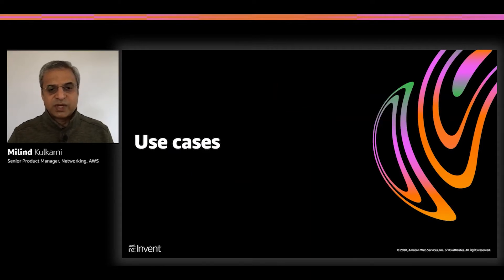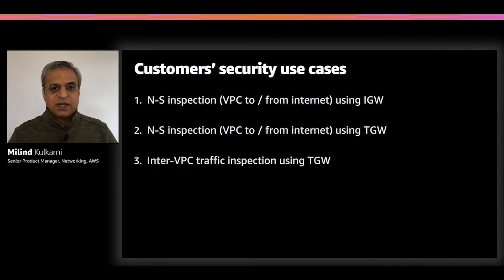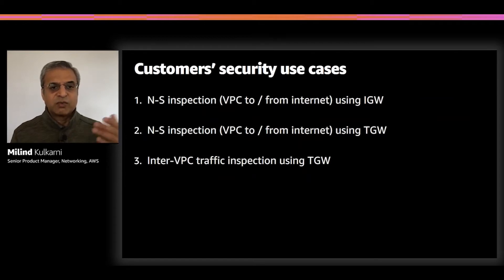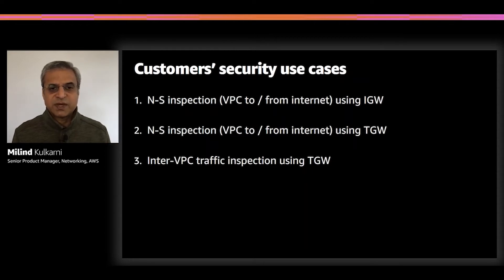There are many use cases we continue to see from our customers. We have prioritized three security use cases, although Gateway Load Balancer works much broader than just security — you can use it for a whole bunch of things. But we're going to focus on security for the sake of this presentation. The three use cases are: North-South inspection using an internet gateway or IGW, North-South inspection using a transit gateway, and East-West traffic between two VPCs.